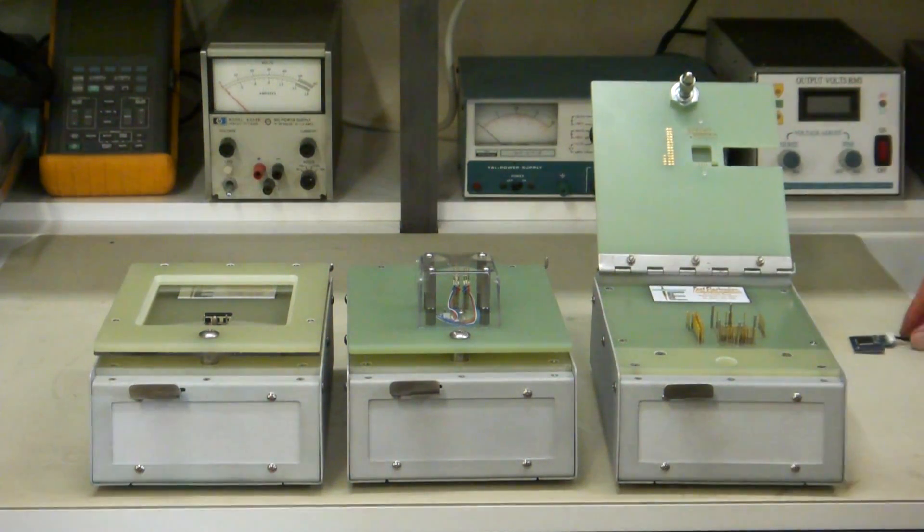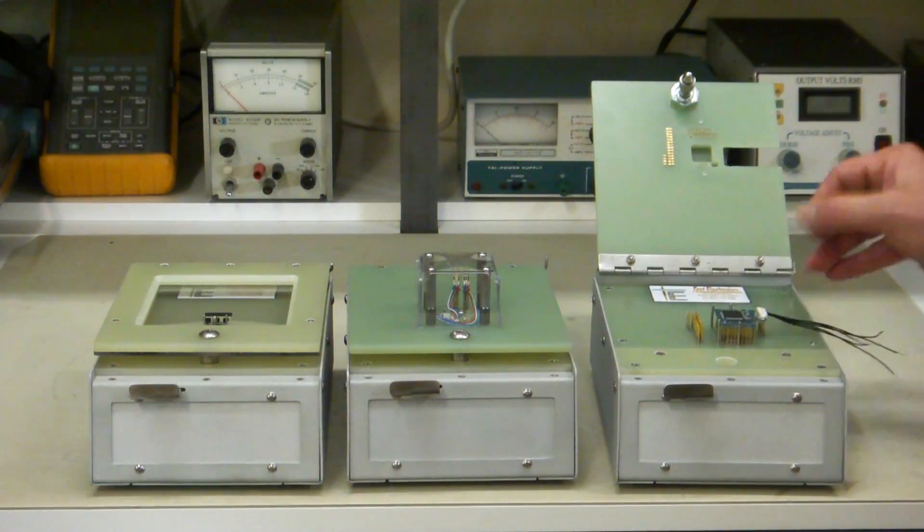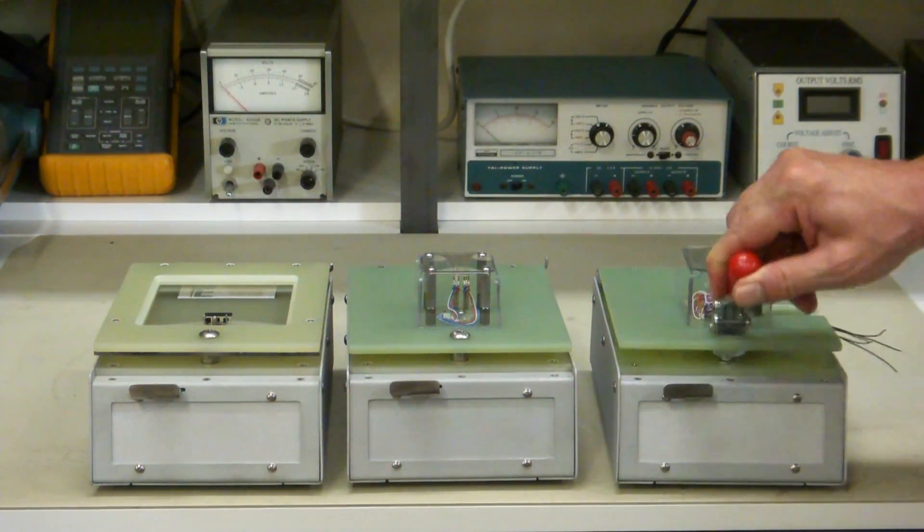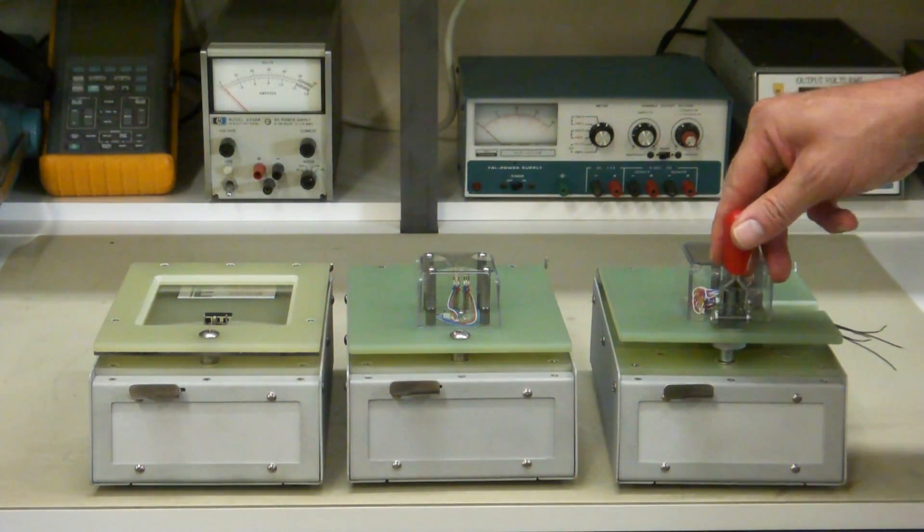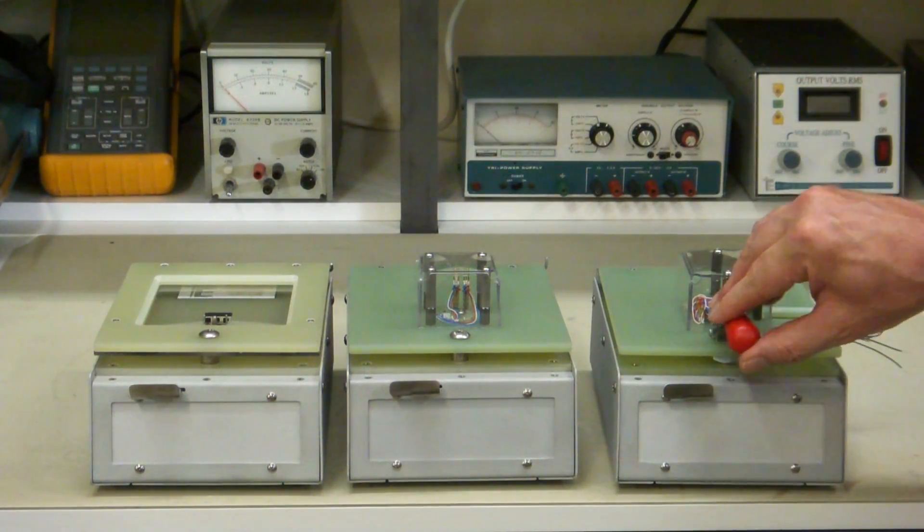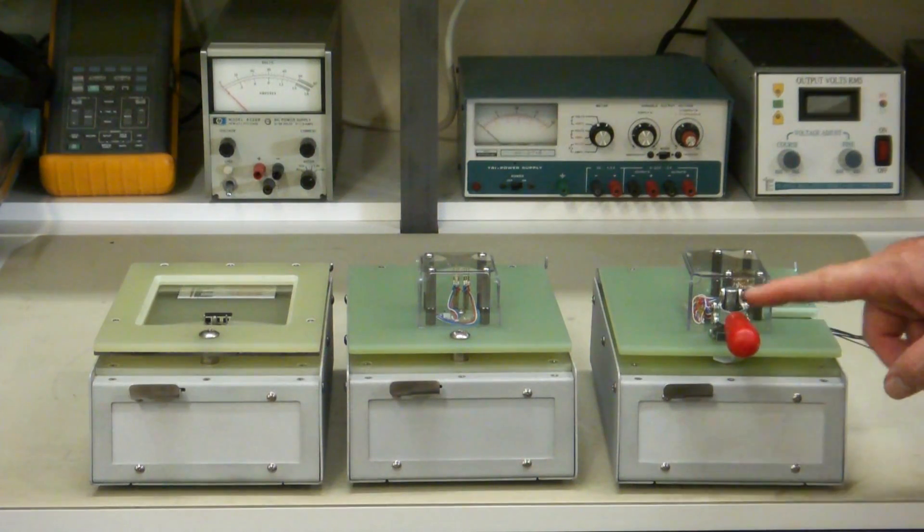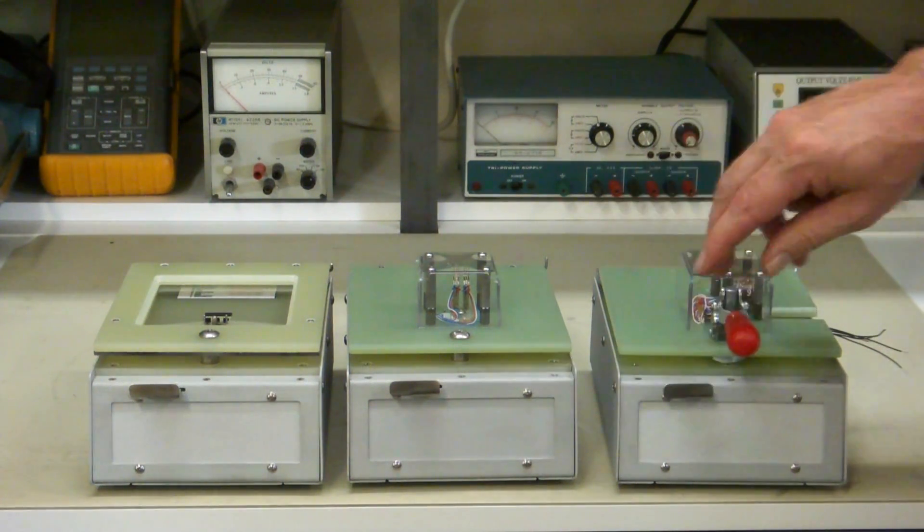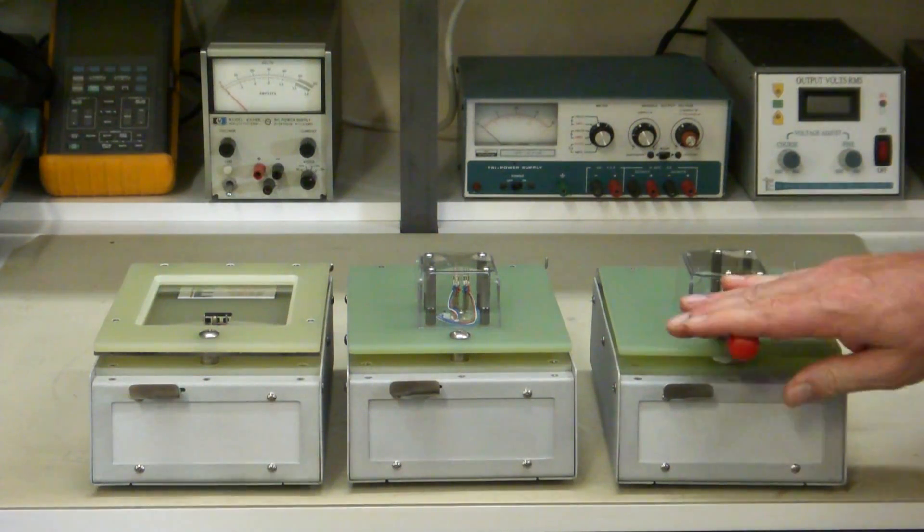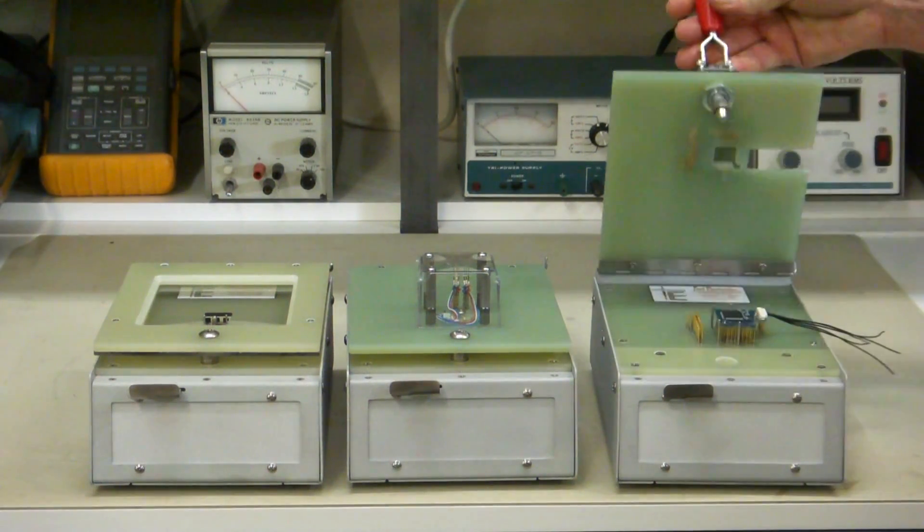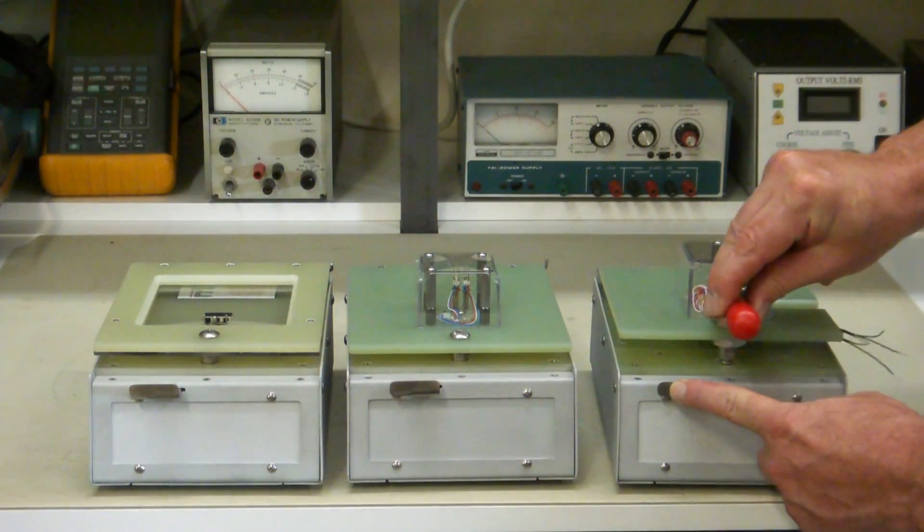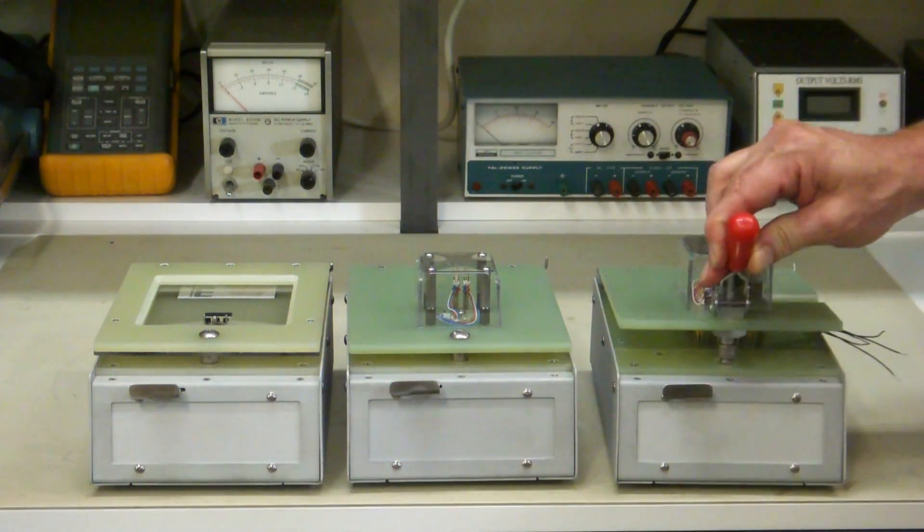So what we do is we have this lever latch mechanism that multiplies the force 50 to 1 so that your test technician isn't pressing so hard on this fixture lid to close it all day long. Now this still has the same kind of release here, so if for some reason the fixture jams up and doesn't open with just the use of the lever latch like this, you can press this button and that will also release it.